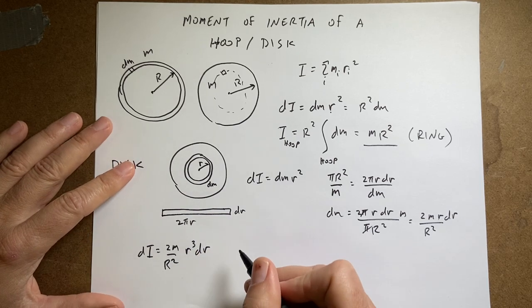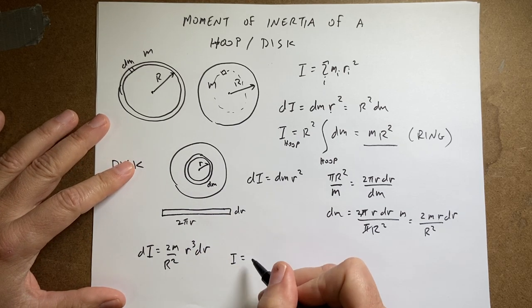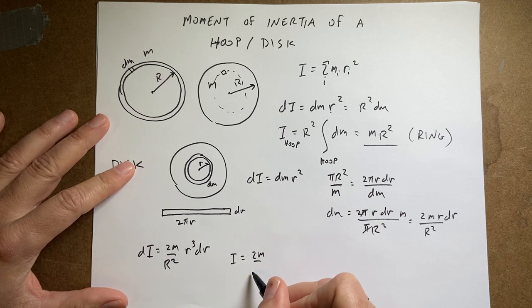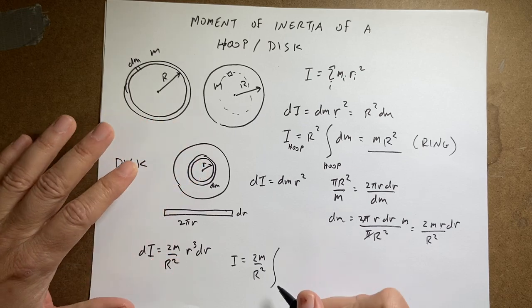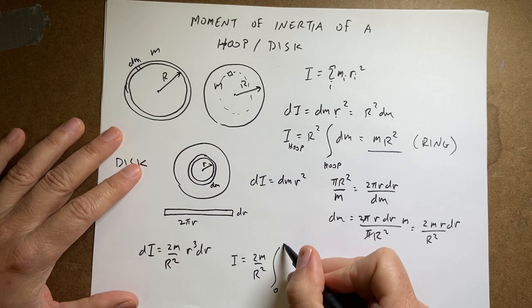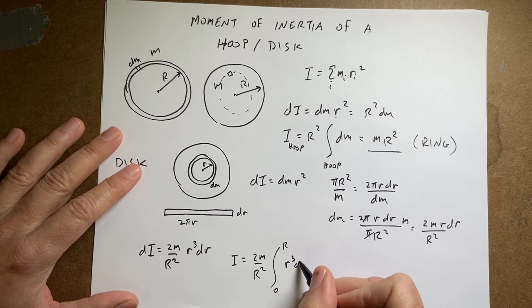So now I can integrate both sides. I get I equals the integral of 2m over R squared. That's just a constant from r equals 0 to r equals R, r cubed dr.